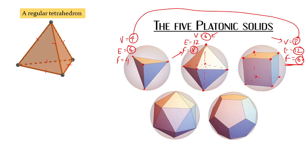We are just looking at the three simpler ones. When we start looking at the icosahedron and the dodecahedron, how many such properties will emerge? I'll leave it for you to think about and enjoy.